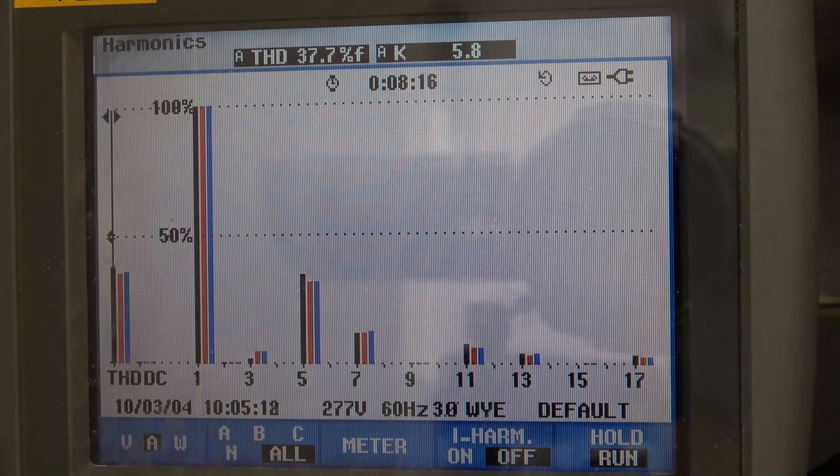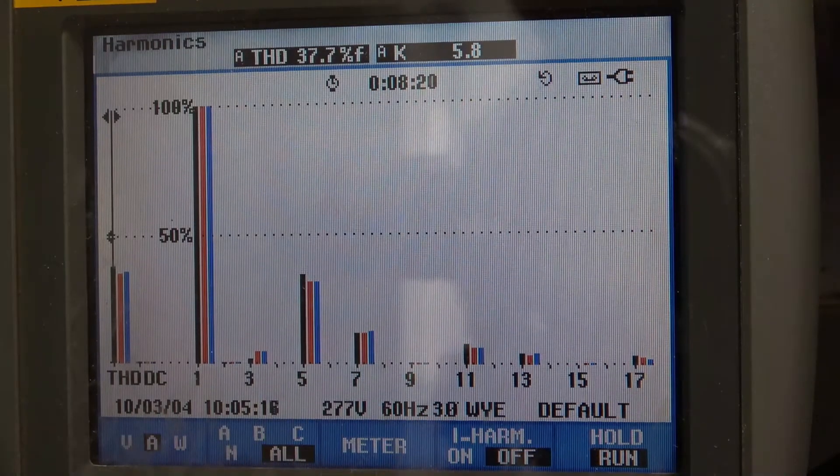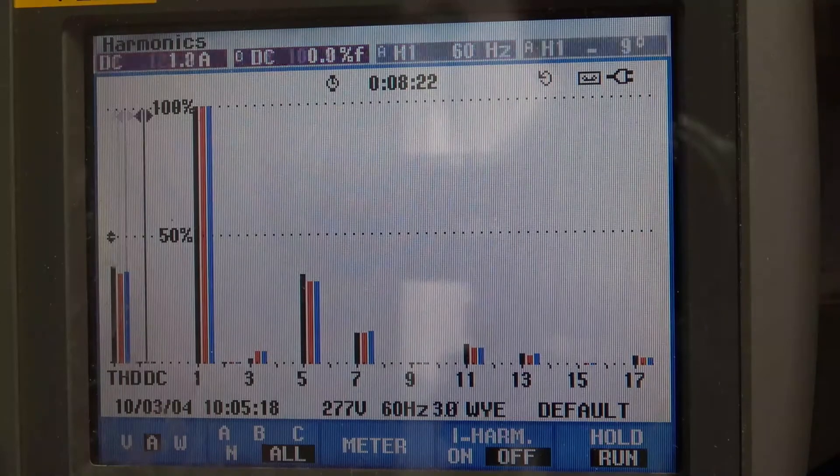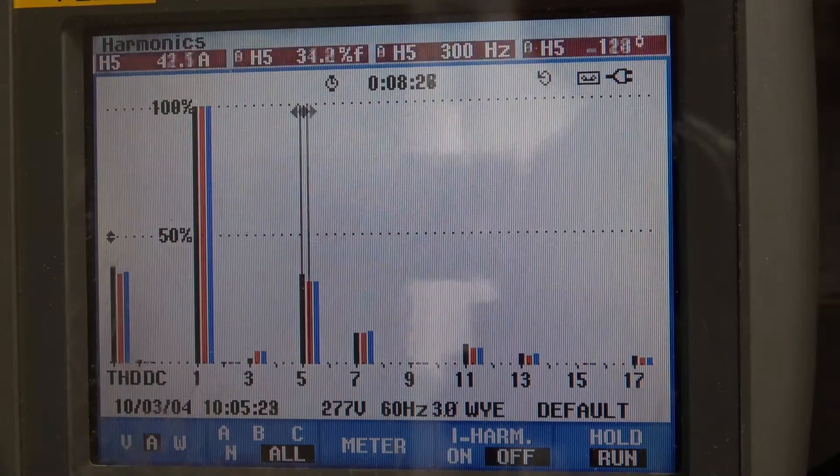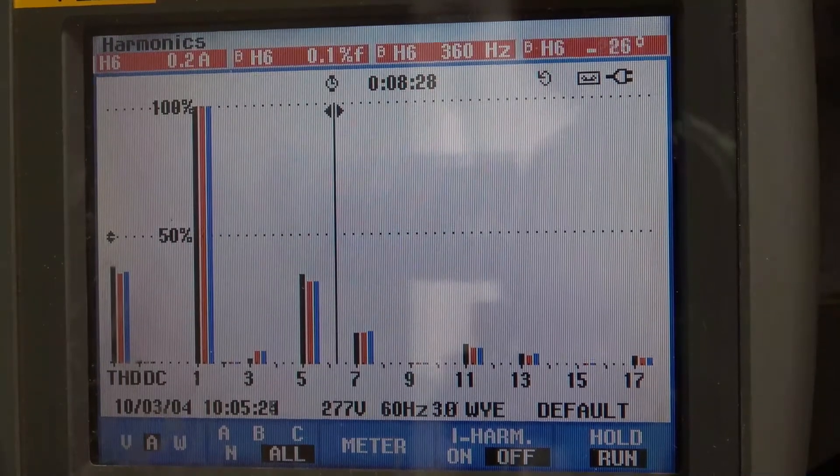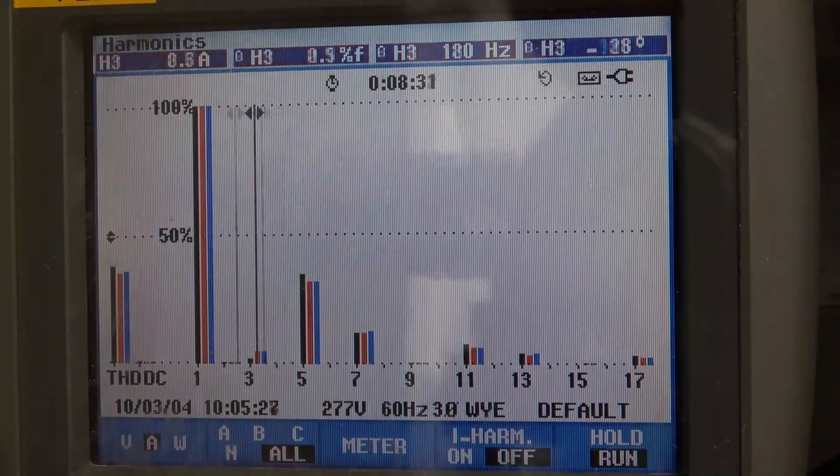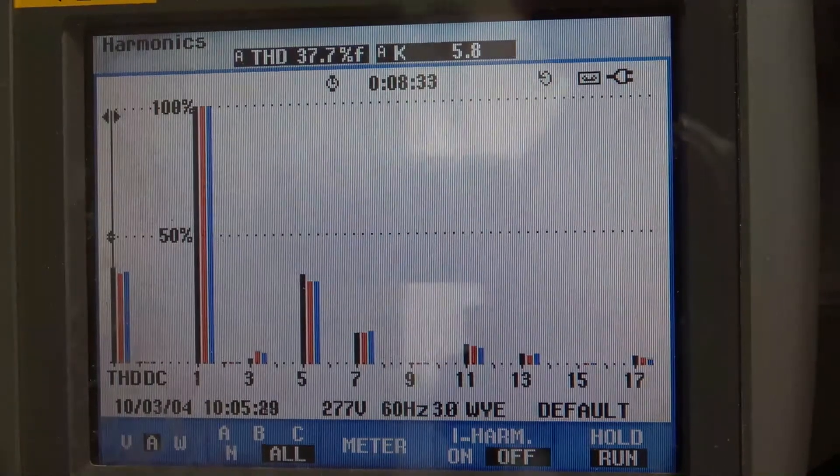So we have our typical six pulse drives. We have our 5th and 7th, 11th and 13th harmonic. For example, our 5th harmonic is here, 7th. So you can see a significant amount of harmonic current and our total harmonic distortion.